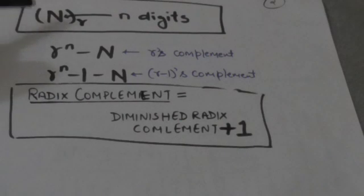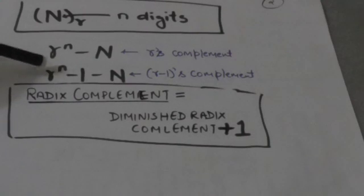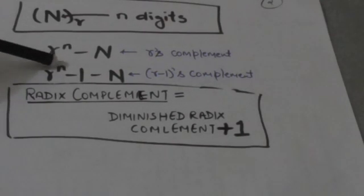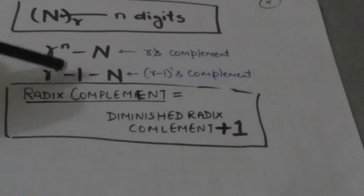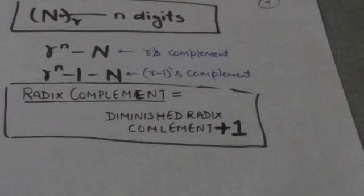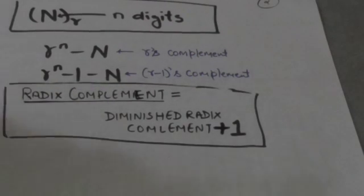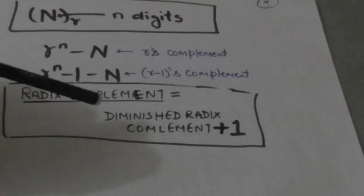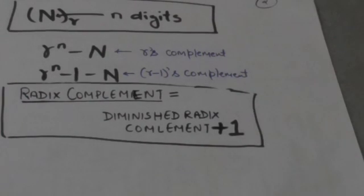The r minus one's complement or diminished radix complement of number N will be r raised to power n minus 1 minus N, where r is the base, small n is the number of digits in number N, and capital N is the number itself. From this formula we can conclude that the radix complement of a number equals its diminished radix complement plus 1. So if we have the diminished radix complement of a number, by adding 1 to it we can get its radix complement.